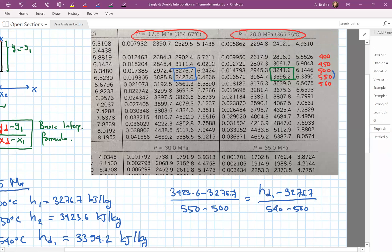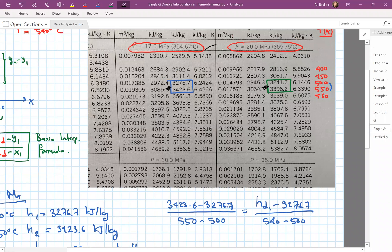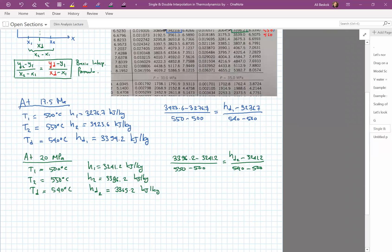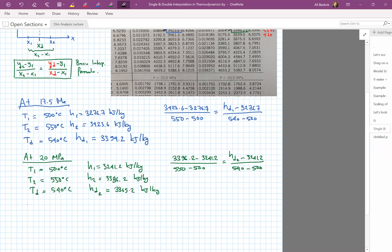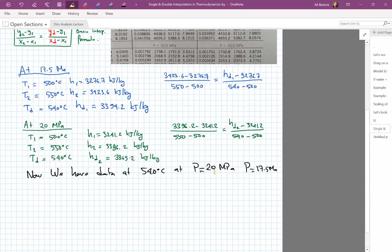Ladies and gentlemen, we have really found some values between this and that. Now it's important that we do an interpolation between these two pressures. That's the last step we need to do. Now we have data at 540 degrees Celsius at P equals 20 MPa as well as P equals 17.5 MPa. Let's do an interpolation now between these pressures to give us the pressure of 19.3 MPa.